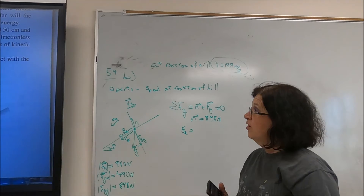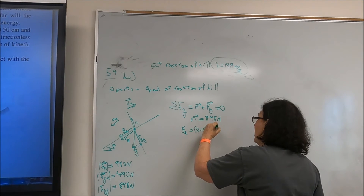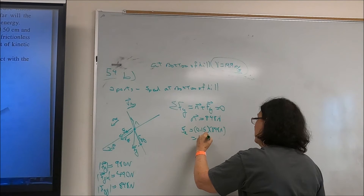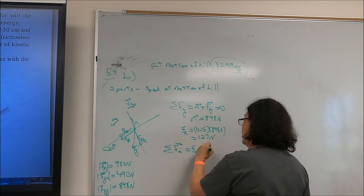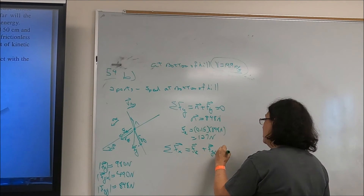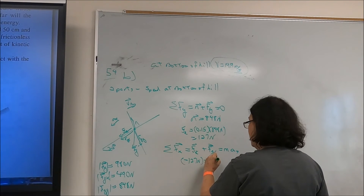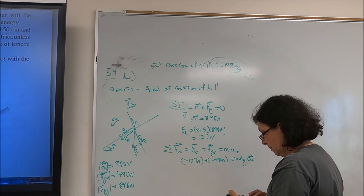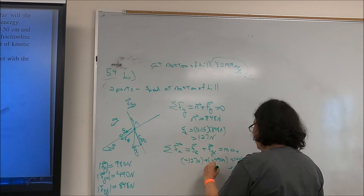Sum of forces in x: −127 N (friction) + (−490 N) (gravity component) = 100 kg × a_x. Solving: a_x = −6.17 m/s².